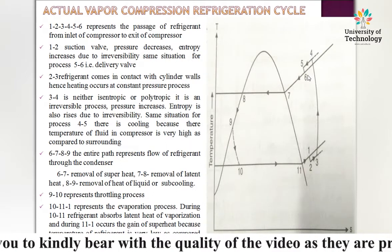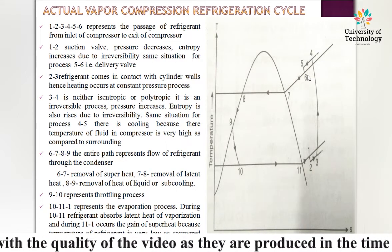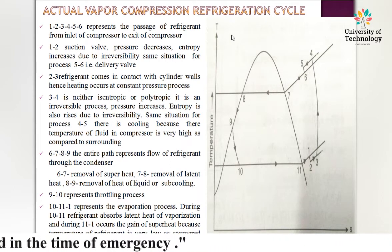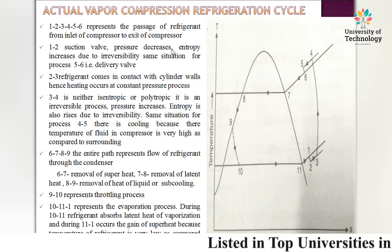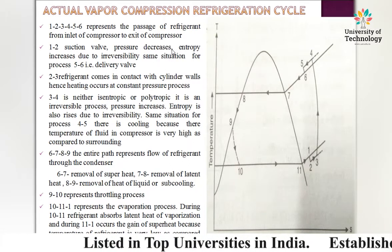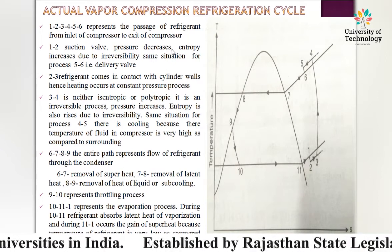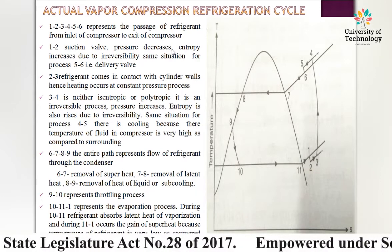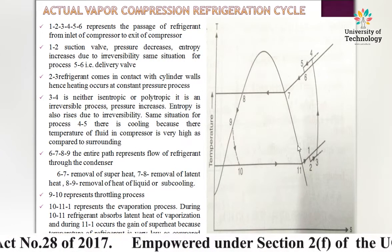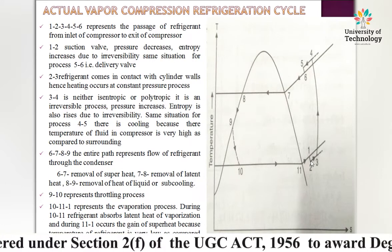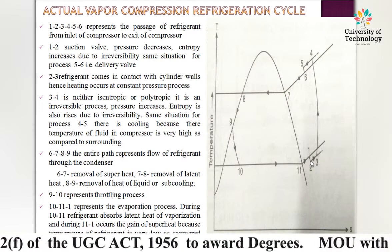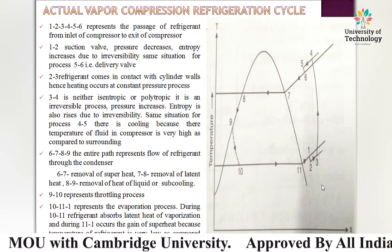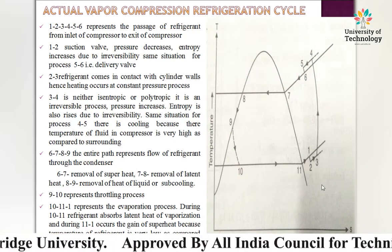In the suction valve, a throttling process takes place. During throttling, expansion of the refrigerant occurs, causing pressure to drop and entropy to increase due to irreversibility. Therefore, for process 1→2, the curve is inclined in the forward direction with respect to the S axis.